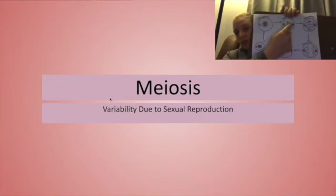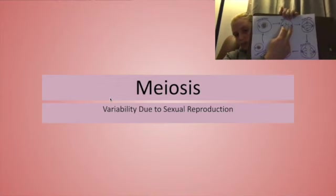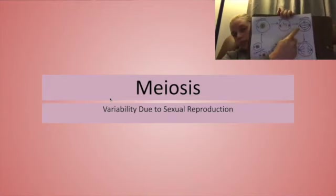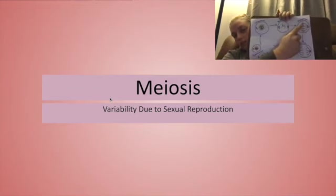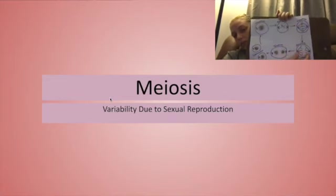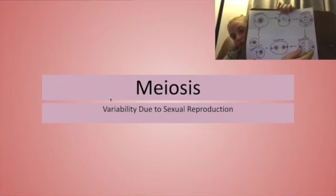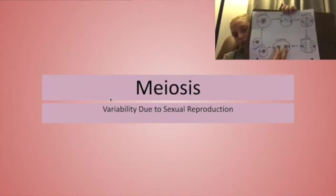Now that the DNA is all tightly wound into these chromosomes, these sister chromatids, the nucleus can dissolve, and these centrioles that have migrated to opposite poles are going to produce spindle fibers. During metaphase, these sister chromatids are going to align in the center of the cell, and these spindle fibers are going to attach at the centromere of the sister chromatids, and in anaphase, they're going to pull these sister chromatids apart. They're going to separate the copies, so that now each cell is going to have a single set of chromosomes.